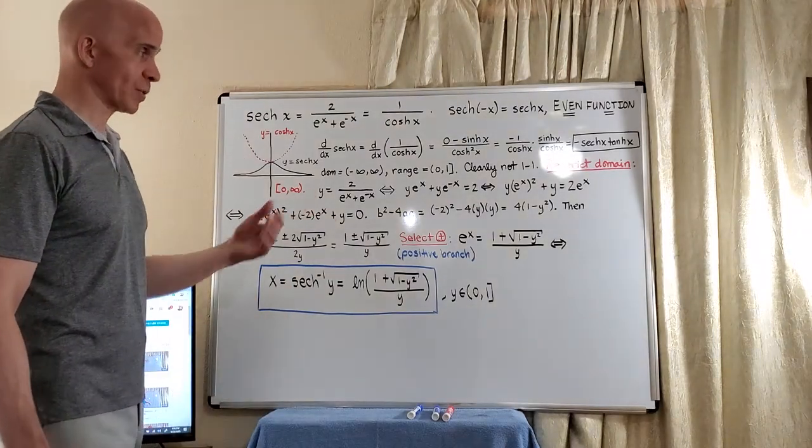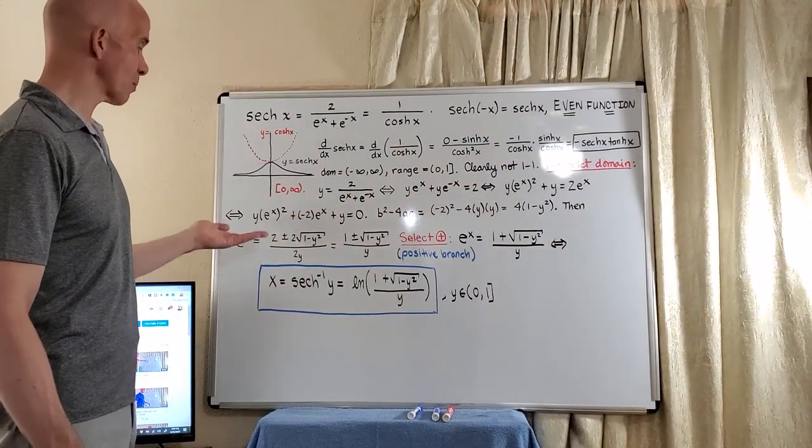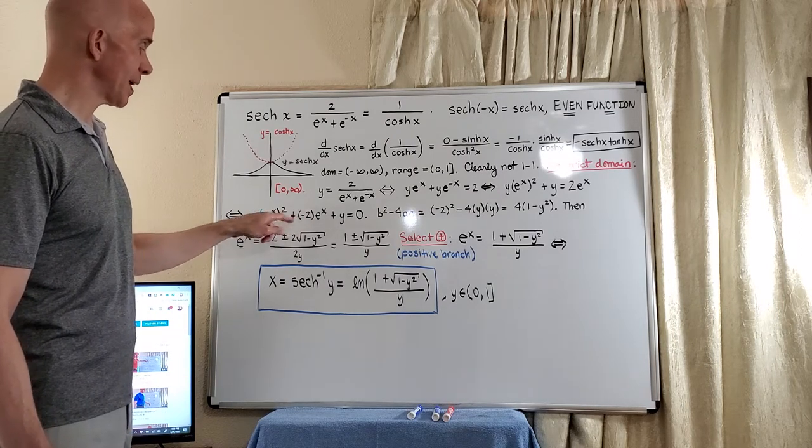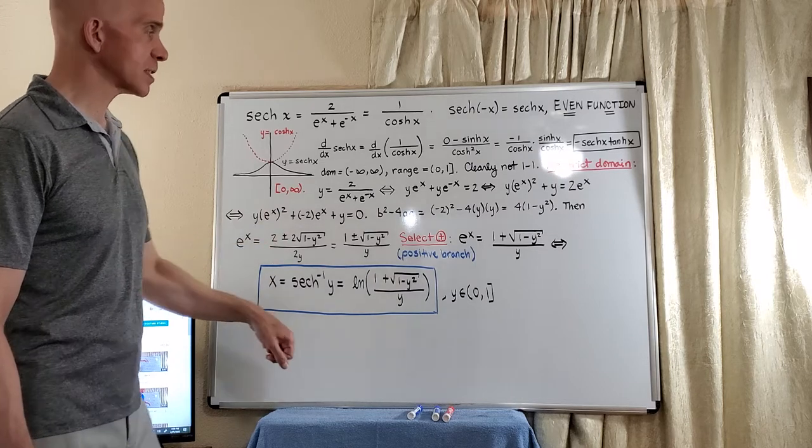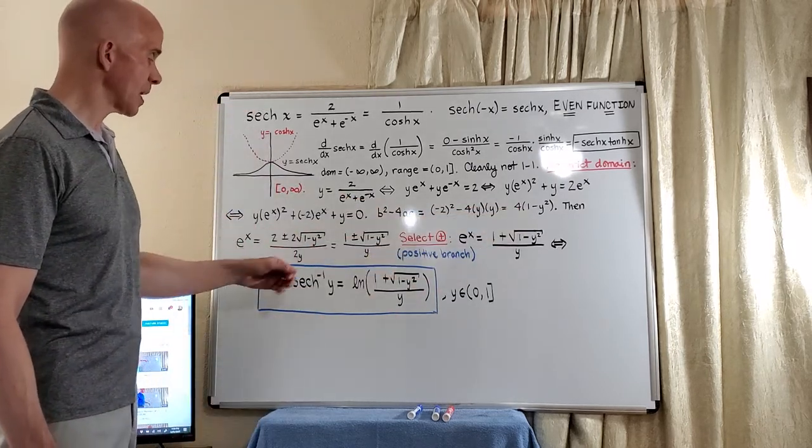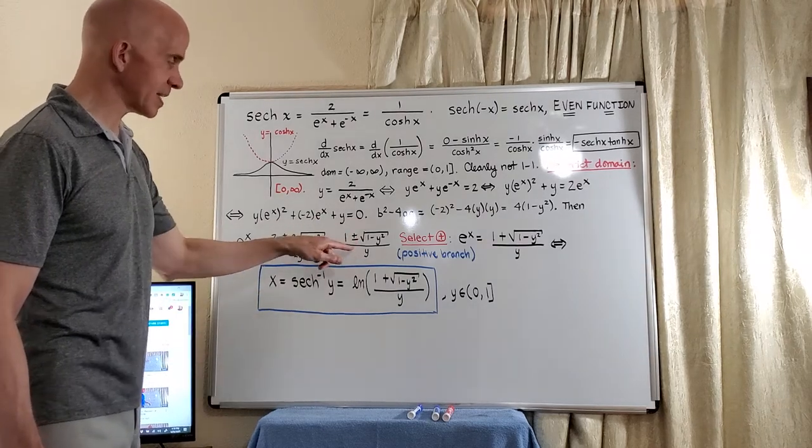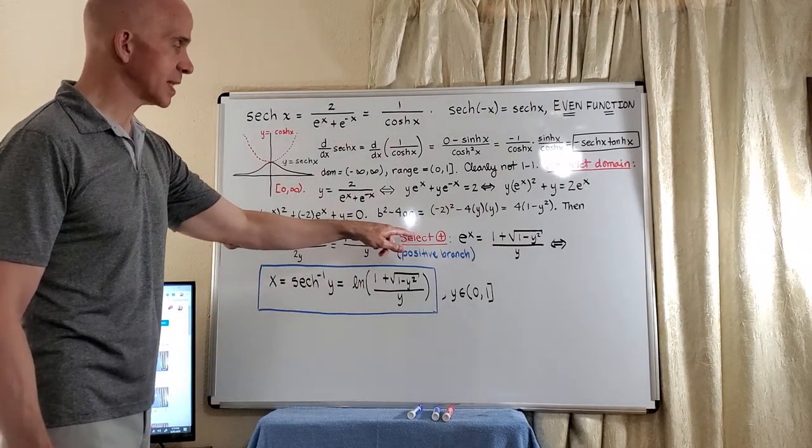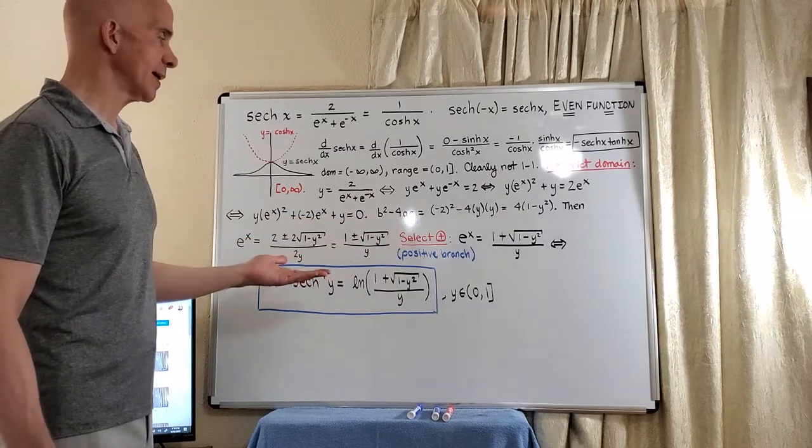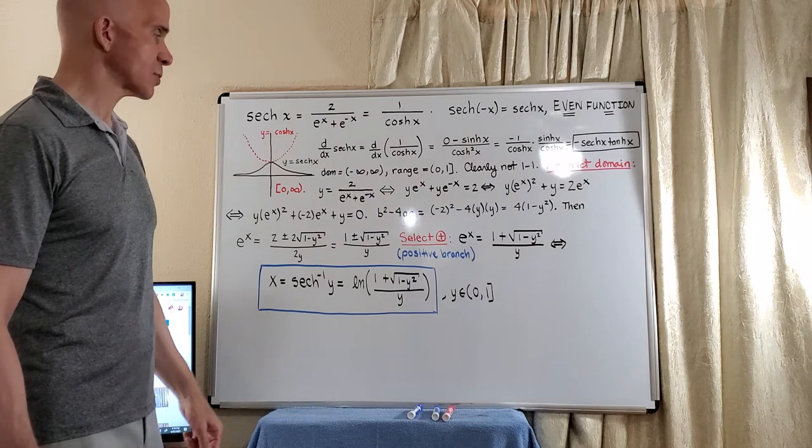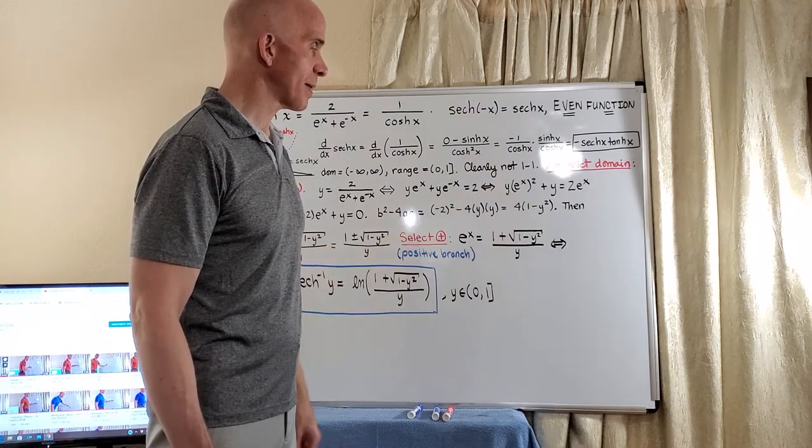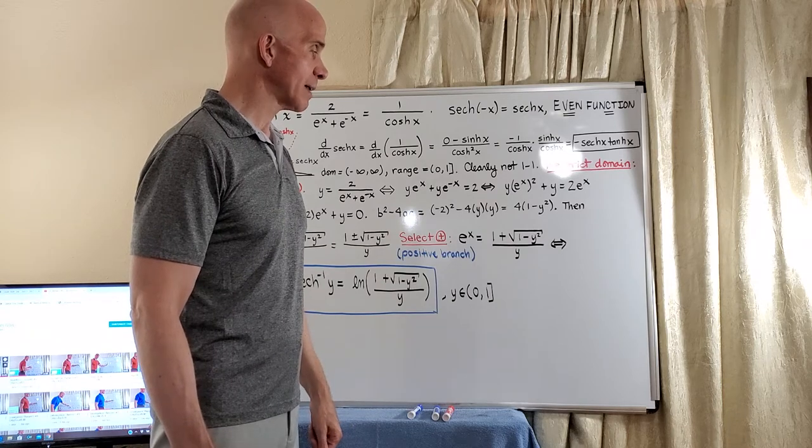Then, because we have quadratic in e to the x by the quadratic formula, we have e to the x equals the opposite of b. That will be a positive 2 plus or minus the square root of the discriminant divided by 2a. And of course, all the 2s absorb. And like I said before, we will select the positive radical here so we can get the positive branch in the inverse function. And so this will give us e to the x equal 1 plus the square root of 1 minus y squared divided by y.